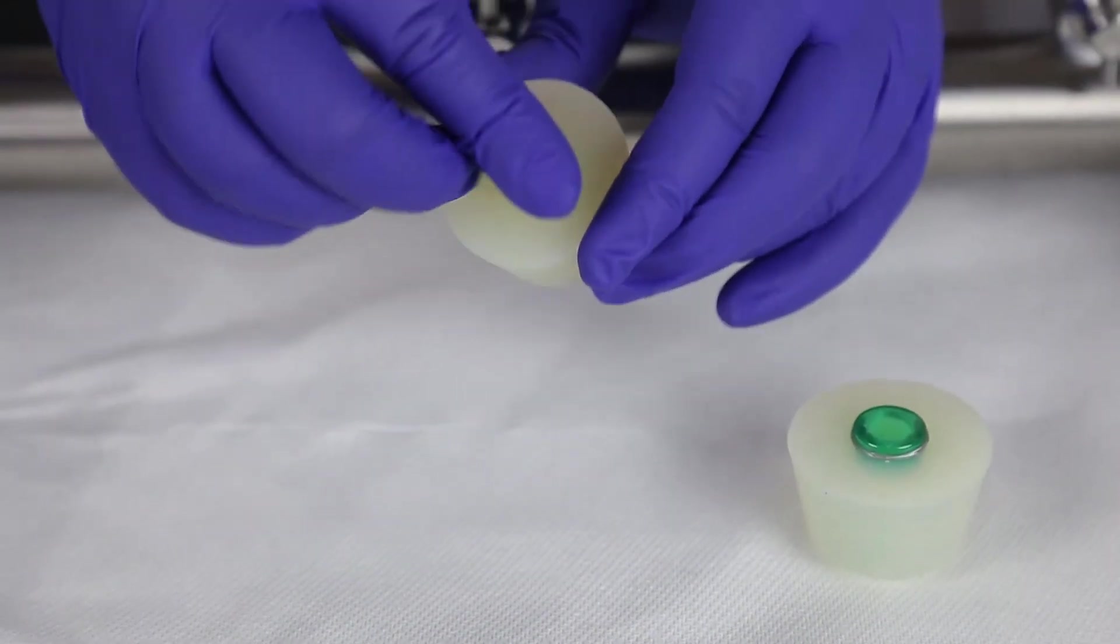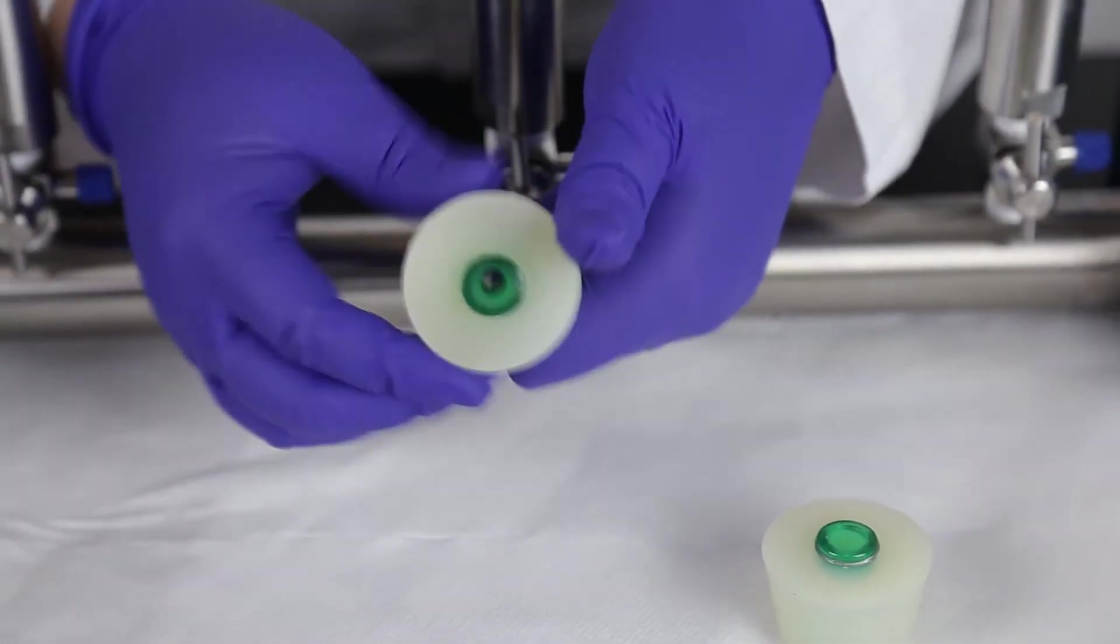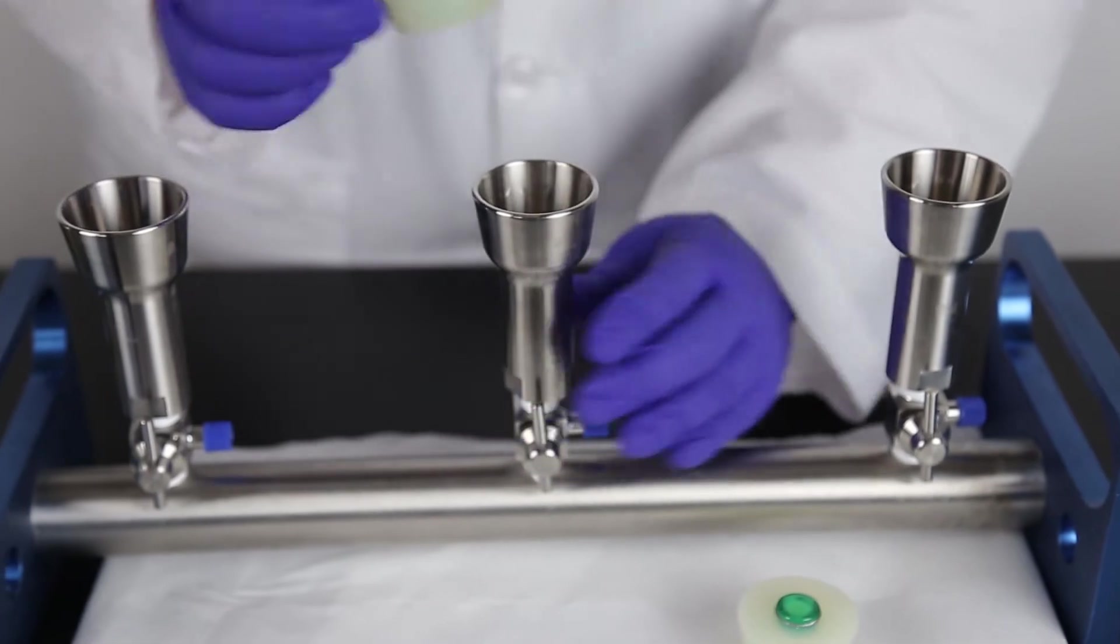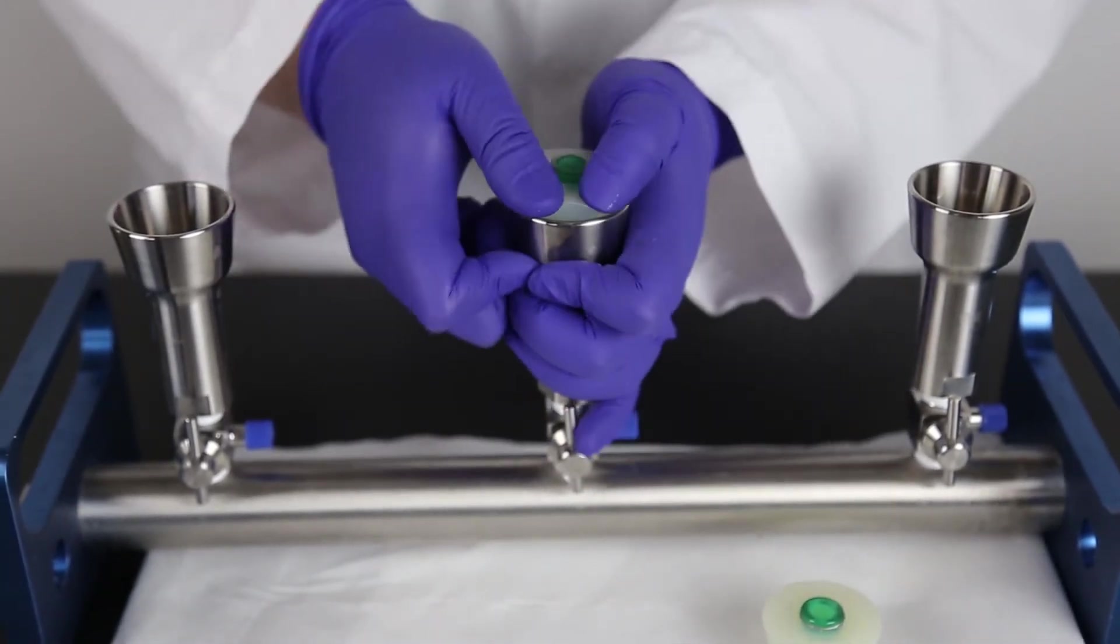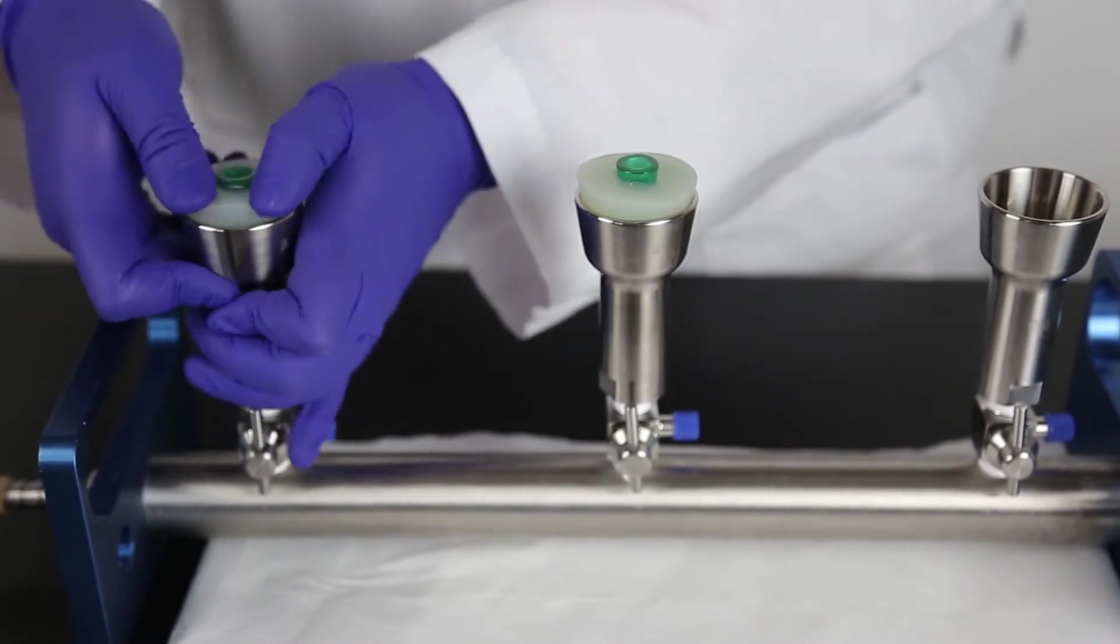Insert the adapter stopper combinations into the appropriate manifold areas and press down firmly. If either stopper or adapter pulls out during filtration, just reinsert it. This won't cause any issues.